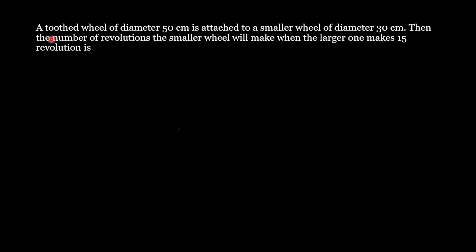We have a question here: a toothed wheel of diameter 50 cm is attached to a smaller wheel of diameter 30 cm. We need to find the number of revolutions the smaller wheel will make when the larger one makes 15 revolutions. A toothed wheel means a small wheel attached inside another wheel.